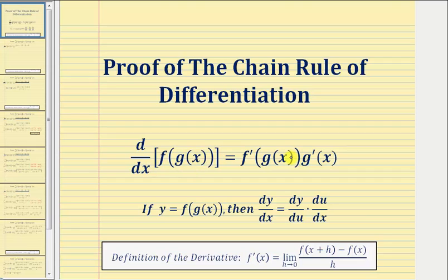We can also express the chain rule using Leibniz notation, where if we let y equal f of g of x, then dy/dx is equal to dy/du times du/dx, where u would be the inner function g of x.